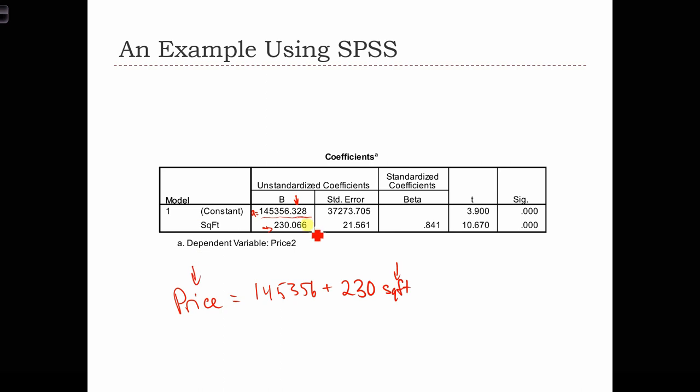For each regression coefficient, SPSS is also going to give us the standard error for that regression coefficient. And we can formulate these t-scores by dividing the coefficient by the standard error. So for example, the t-score for the slope is equal to b minus sigma sub b, which is 230 divided by 21.